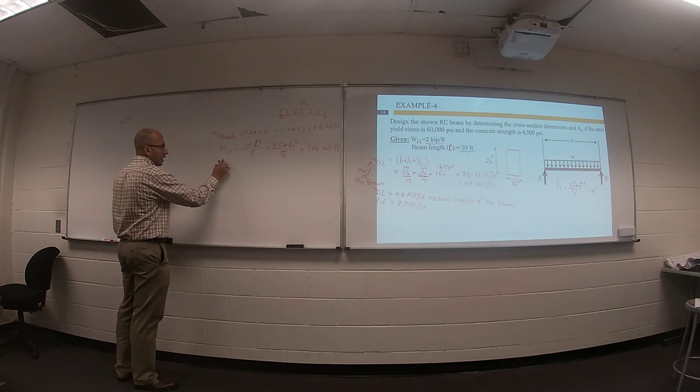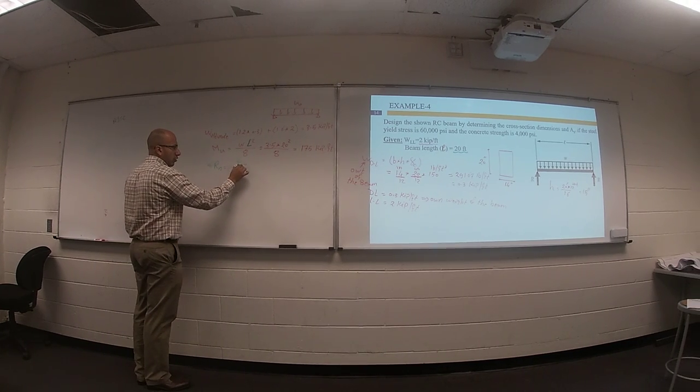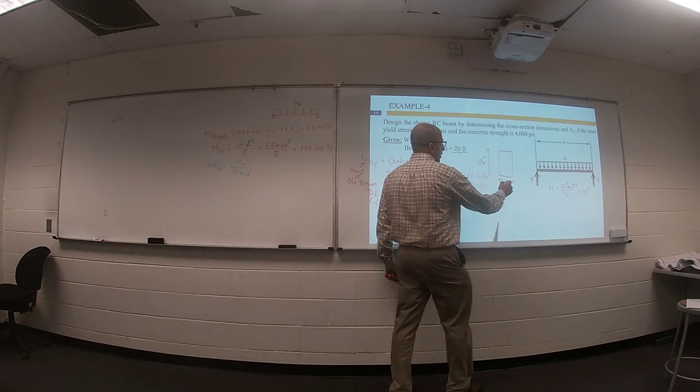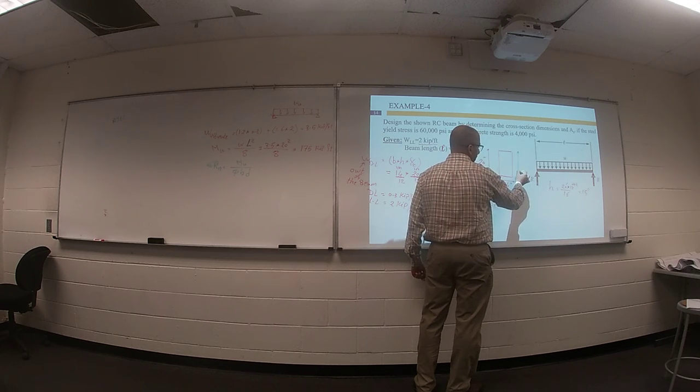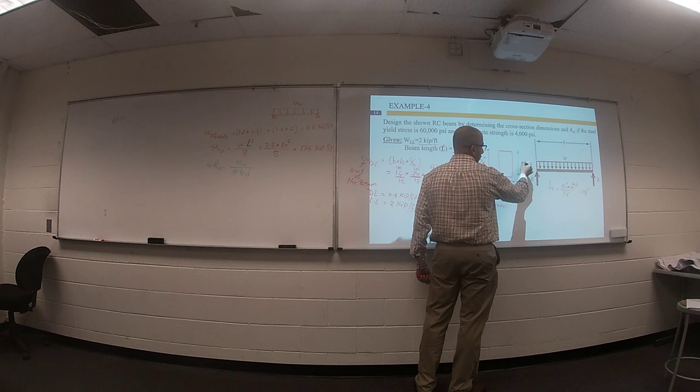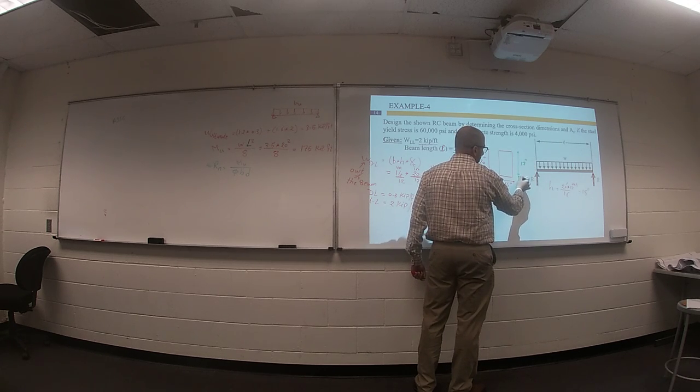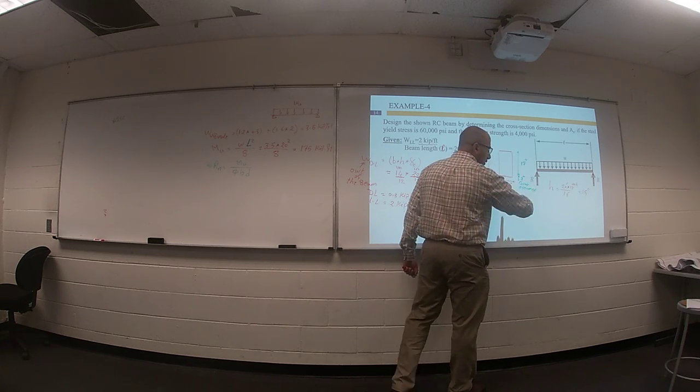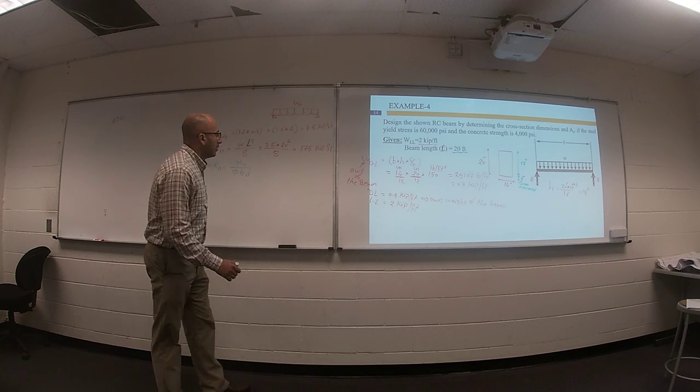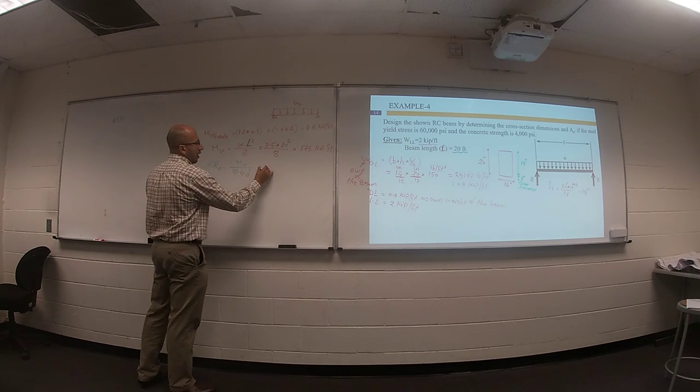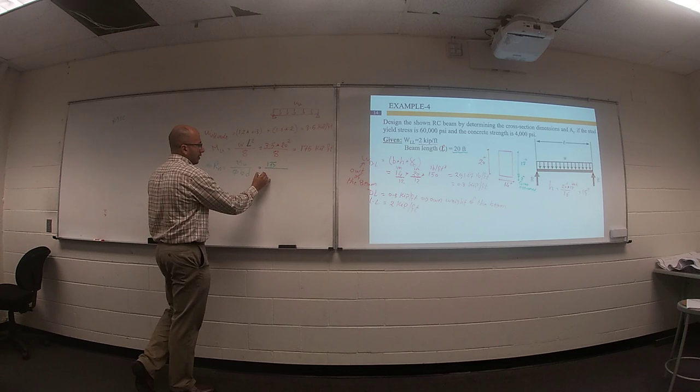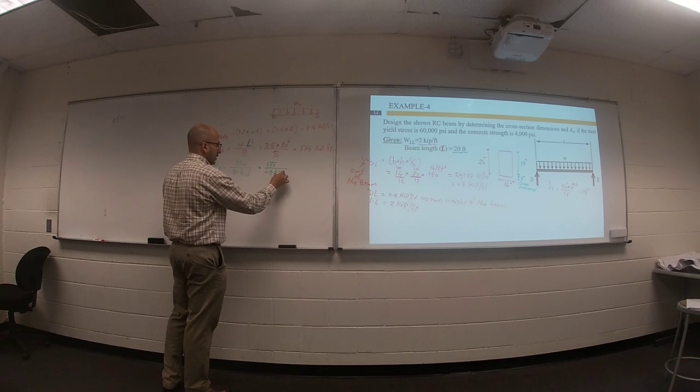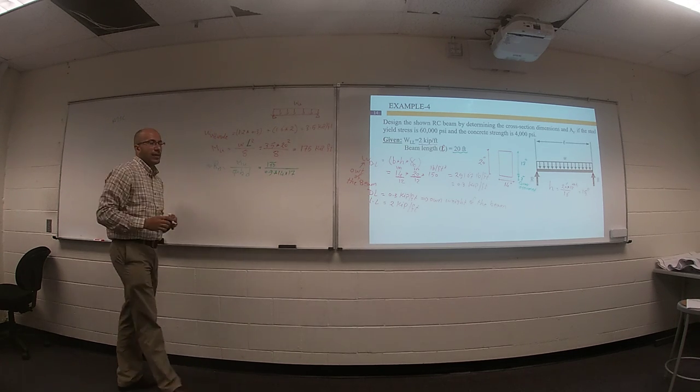Rn equals M ultimate over phi times B times depth squared. I forgot something here. Your depth of steel reinforcement maybe something like 17 inches, for example. And you have here 3 inch cover. This value can be assumed, 2 to 3 inches. So your M ultimate is 175 divided by phi, assume 0.9, B is 14, depth is 17. We have something wrong here.